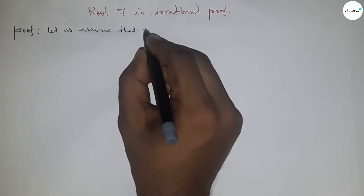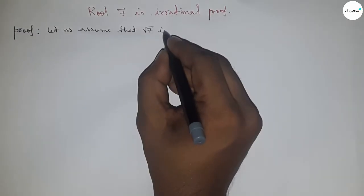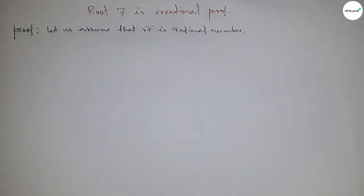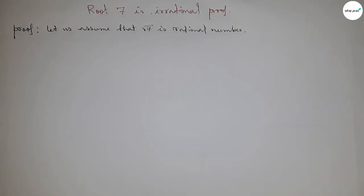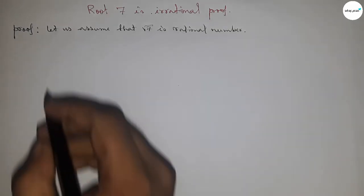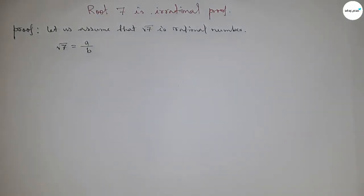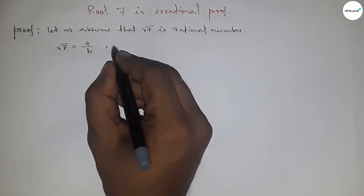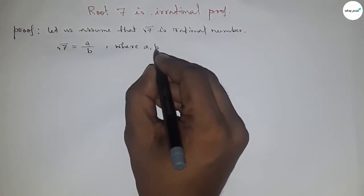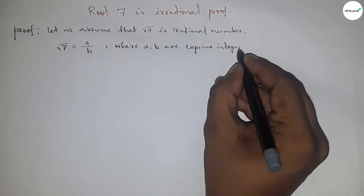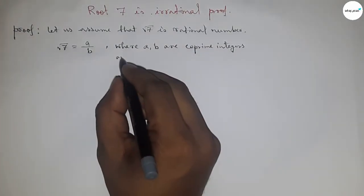First of all, let us assume that root 7 is a rational number. A rational number can be written in the form p by q. Since root 7 is a rational number, root 7 can be written in the form a by b, where a and b are co-prime integers.